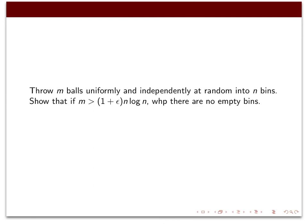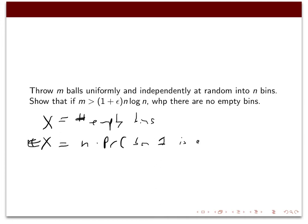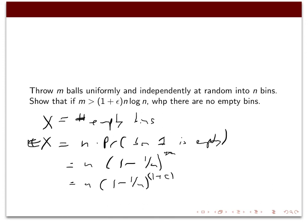X is the number of empty bins. The expectation of x is n times the probability that bin one is empty, which is (1 − 1/n)^m. For this choice of m, this is n · (1 − 1/n)^((1+ε) n log n), and this is asymptotically n · n^(−(1+ε)) = n^(−ε), which tends to zero. Using Markov's inequality, we conclude that with high probability x equals zero — there are no empty bins.